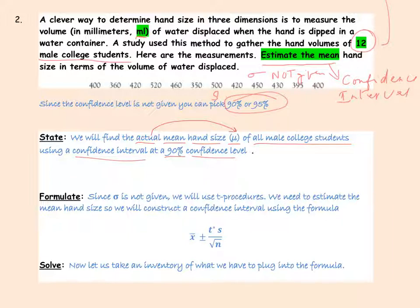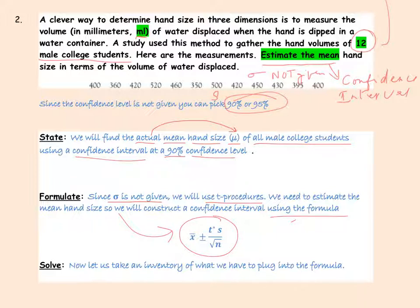The next step is formulation — briefly state which procedure we'll use and why. Since sigma is not given, we're going to use t-procedures. We need to estimate the mean hand size, so we'll construct a confidence interval using the t-procedure formula. The formulate step always ends with the formula, because the formula tells us exactly what we need to finish the problem.